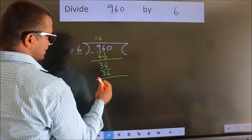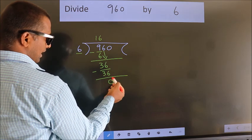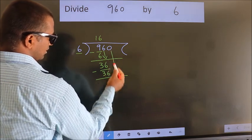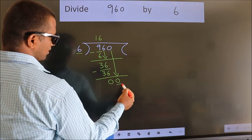Now, we subtract. We get 0. After this, bring down the beside number. So, 0 down. So, 0.